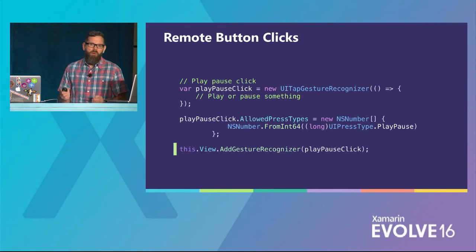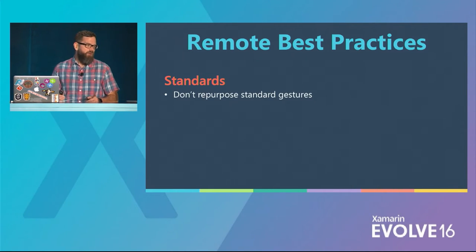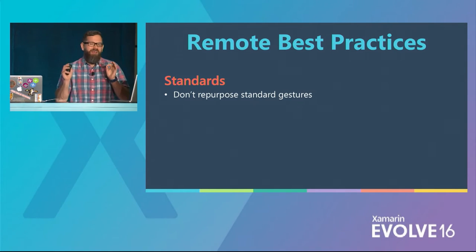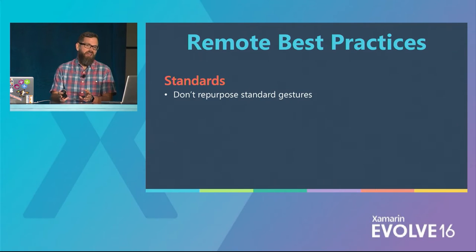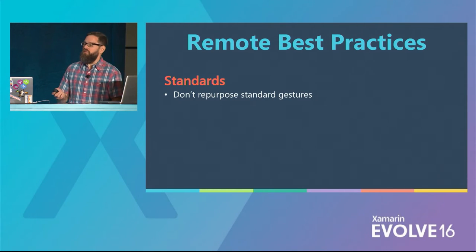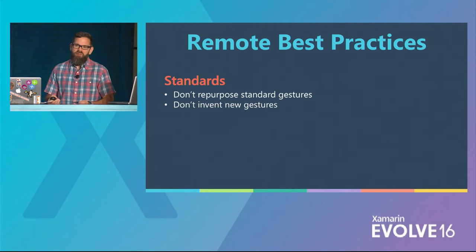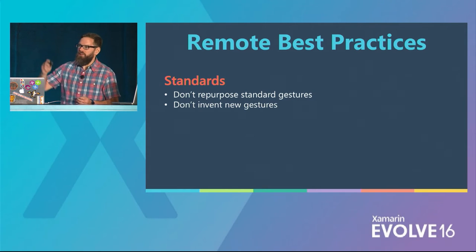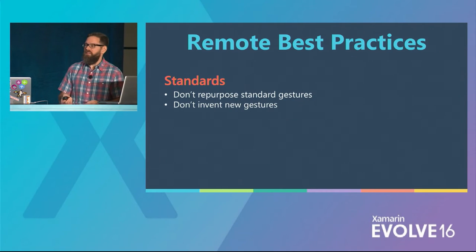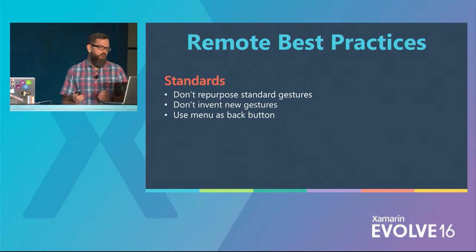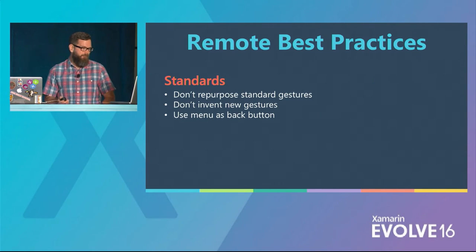This is all similar to iOS development, but what is new is how we implement it — which leads to remote best practices. We always want to avoid repurposing standard gestures: don't make a click event and a touch event do the same thing. Don't invent new gestures — don't require the user to make a circle with the gyroscope to fire a button click. And we always, always want to use the menu button as a back button, with the only exception being games where it serves as a pause button.